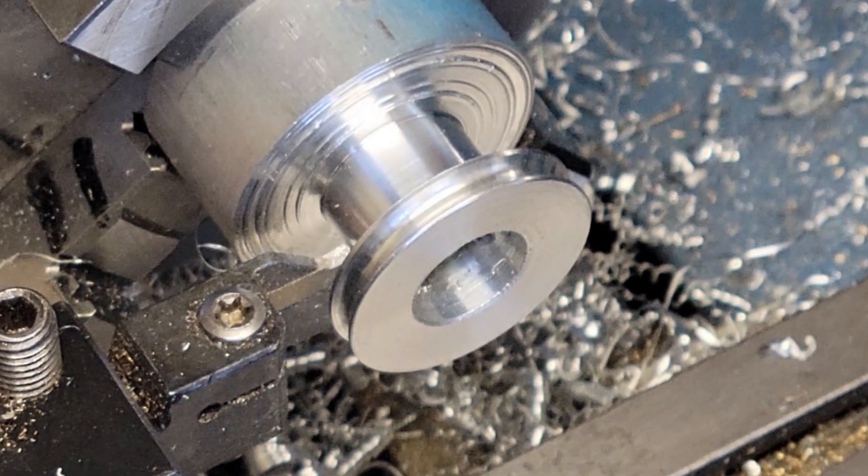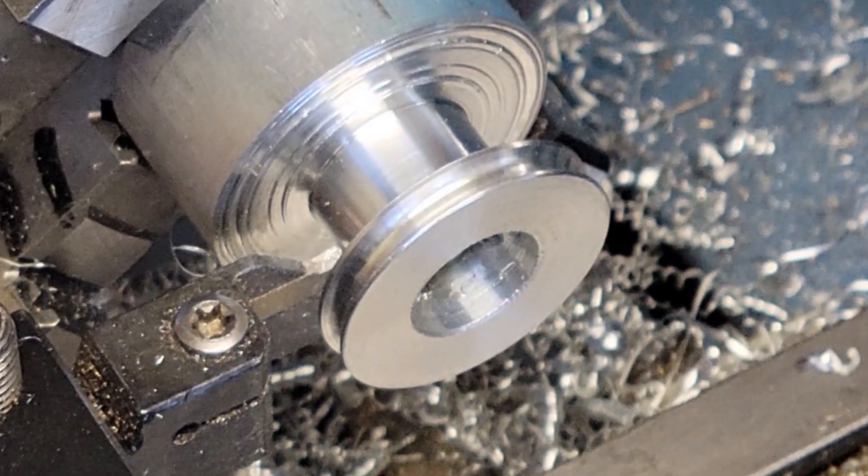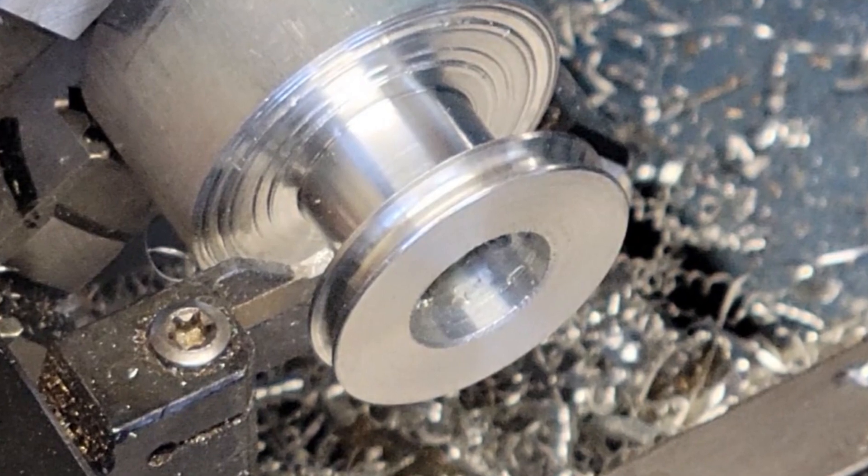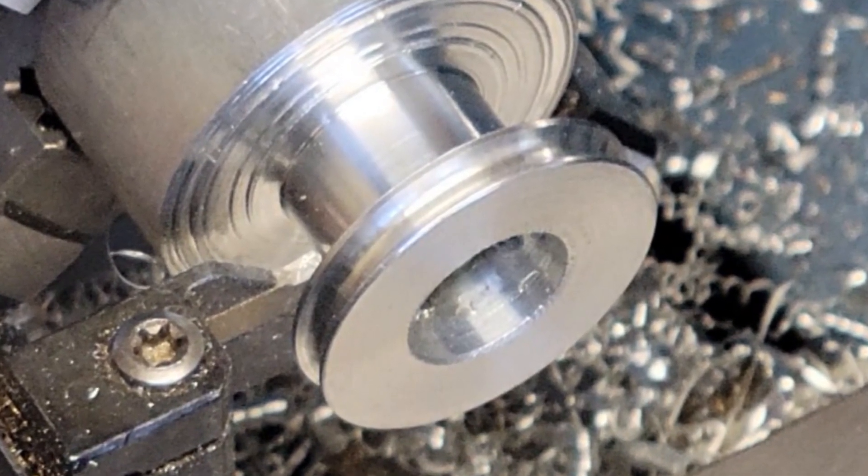To create the pulley groove, we use a form tool with the proper round shape and then machine to a 1/16th inch depth.